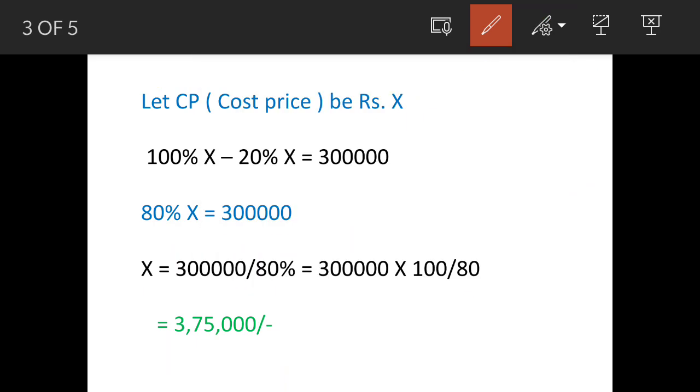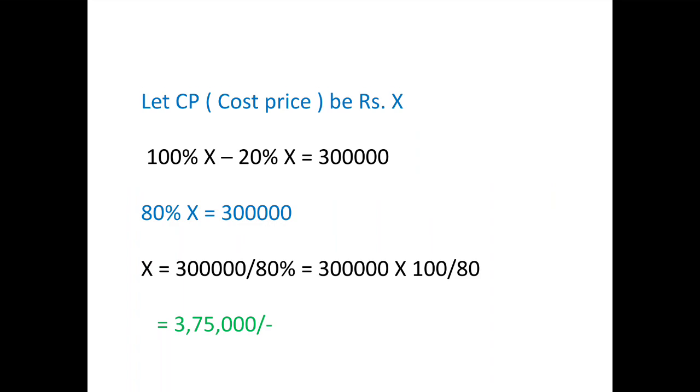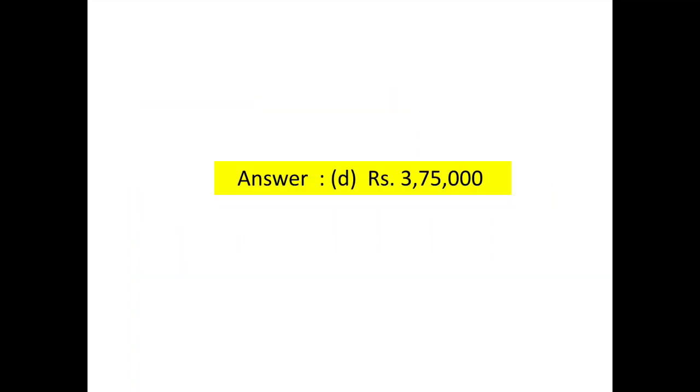So the answer is shown and I told you the reasoning that this three lakh is actually eighty percent, and if you work out twenty percent of this eighty percent then you will go wrong. So you have to adopt this method to work out the price. So answer is option D, rupees three lakh seventy-five thousand. So thank you very much and thanks for watching.